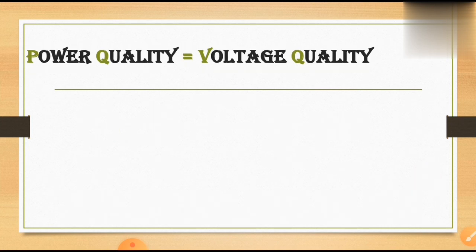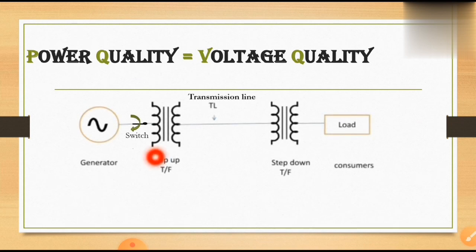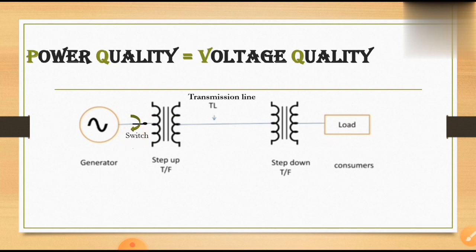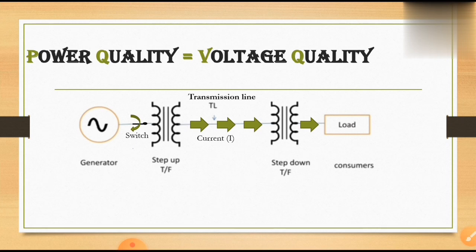Observe the circuit clearly — this is the generator, transmission line, and then the consumer premises. When I close the circuit switch, current passes through the circuit and flows through the load. The current flowing in the circuit is entirely depending upon the load.